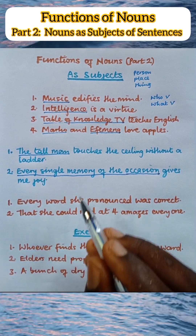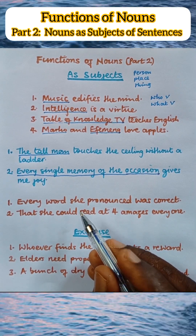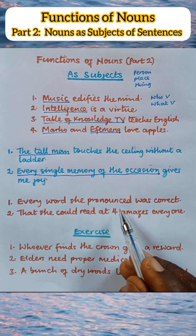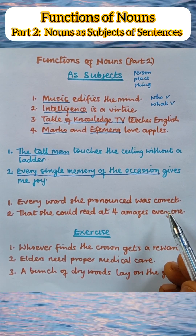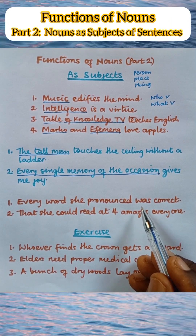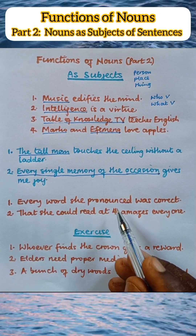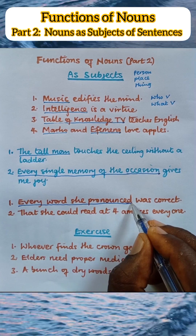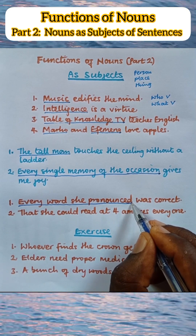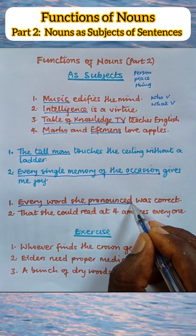Now let's look at where clauses serve as subjects of sentences and are therefore nouns. Example 1: 'Every word she pronounced was correct.' Our verb of interest here is 'was,' and we ask, 'What was correct?' The answer is 'every word she pronounced.' Every word she pronounced is the subject of this sentence. It is a clause, and since it occupies the position of a subject it is also a noun. So this expression is a noun clause.